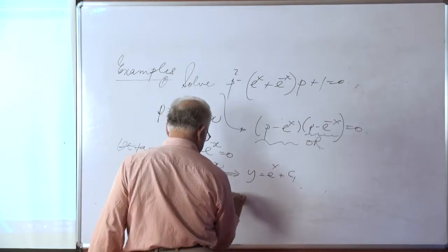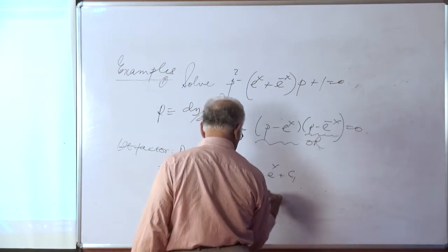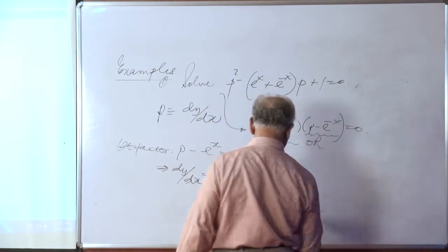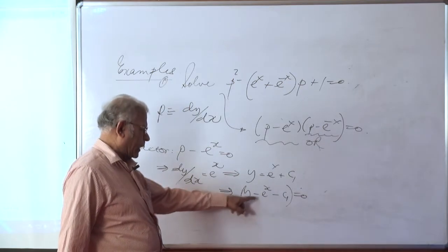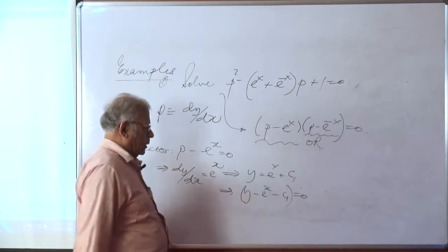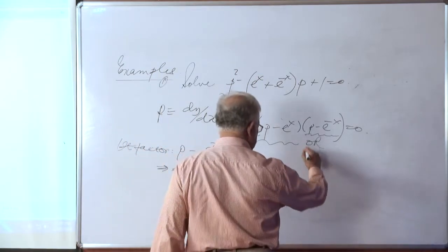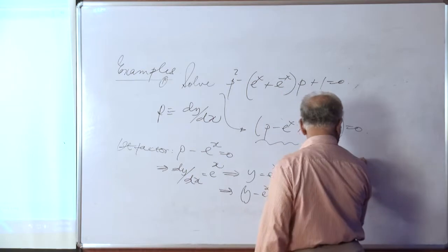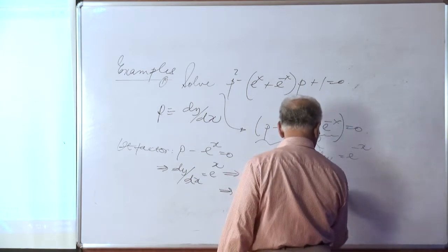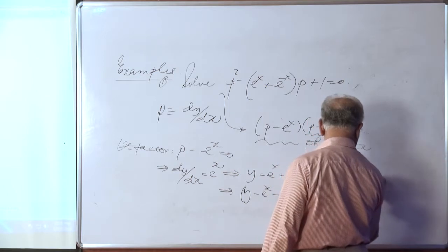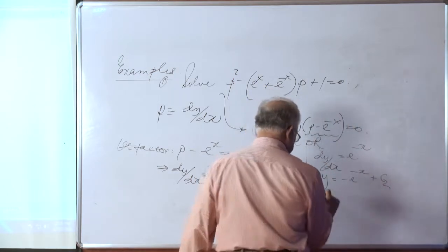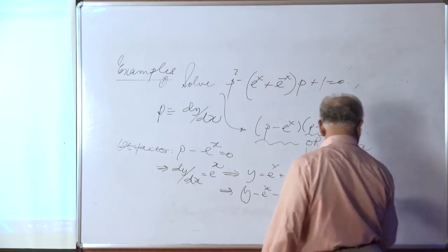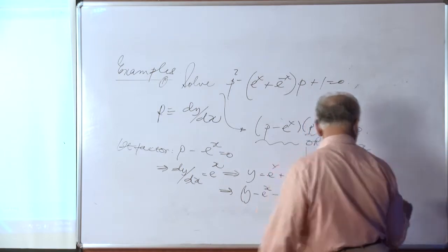In other words, y − e^x − c₁ = 0. This is the solution for y in terms of x and a constant. The next factor will yield: dy/dx = e^{−x}, so y = e^{−x} + c₂.